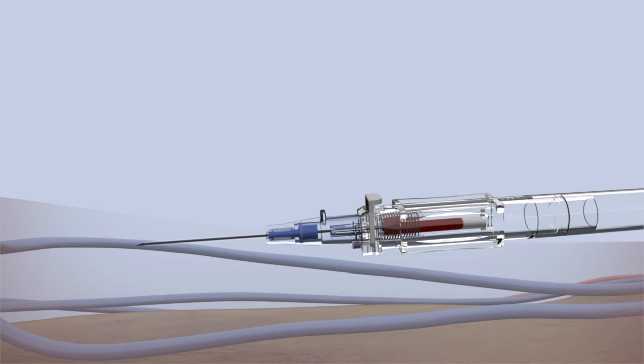Once the catheter has been fully set in the vein, stabilize the catheter body with your non-dominant hand while applying digital pressure on the vein.